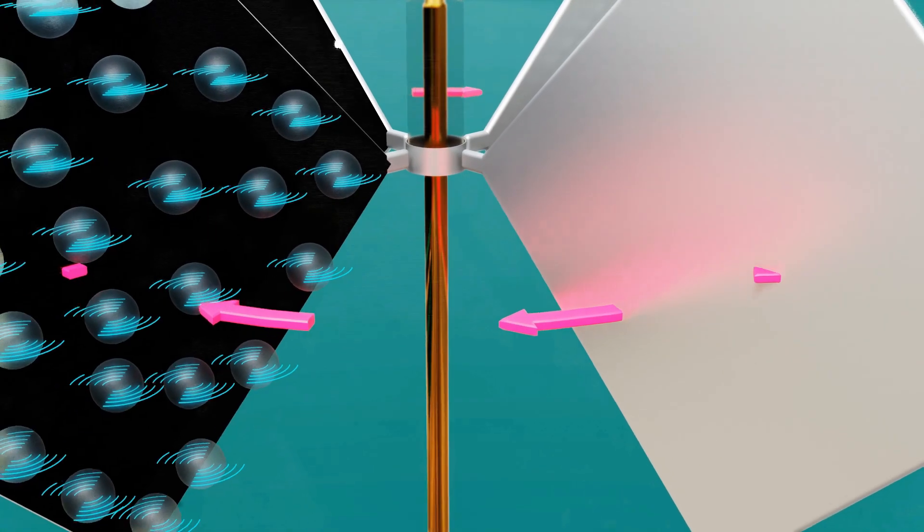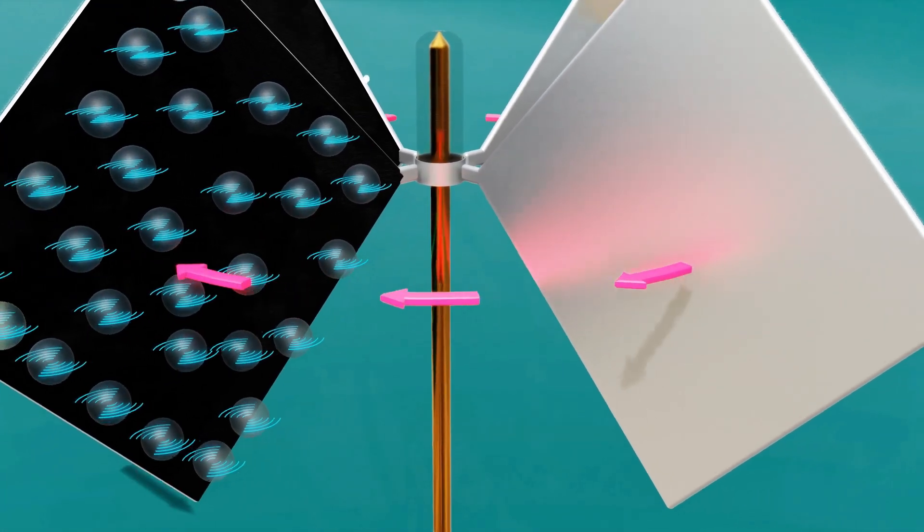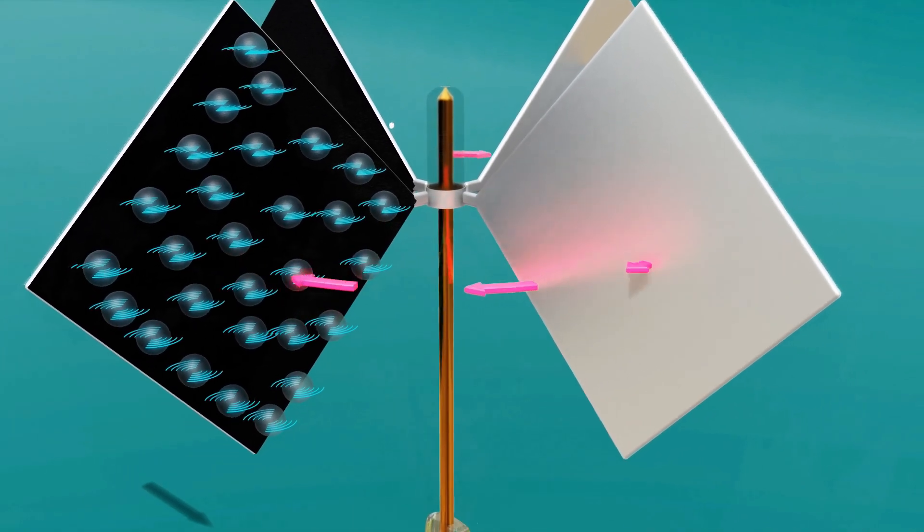In the case of a Crookes radiometer, this repulsive interaction can knock nearby air molecules away from the vein's surface, creating momentum that causes the veins to rotate in the opposite direction.